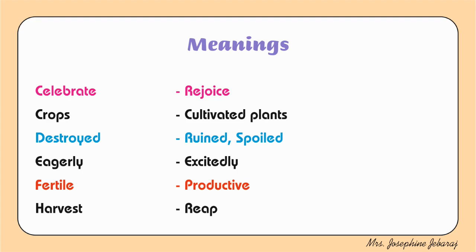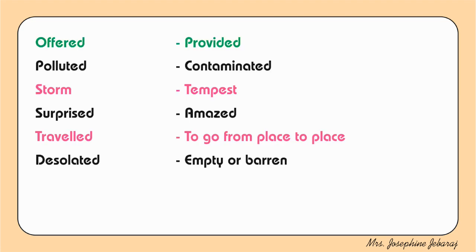Celebrate — rejoice. Crops — cultivated plants. Destroyed — ruined or spoiled. Eagerly — excitedly. Fertile — productive. Harvest — offered or provided. Polluted — contaminated. Storm — tempest. Surprised — amazed. Travel — to go from place to place. Desolated — empty or barren.